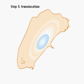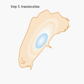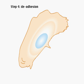After the cell body translocates, the back of the cell releases from adhesion sites and moves forward.